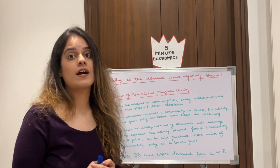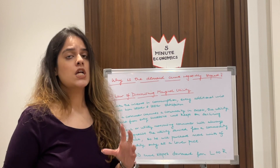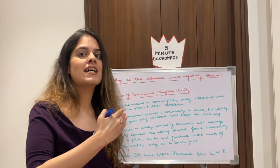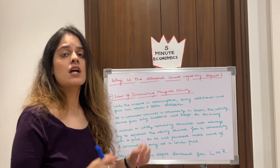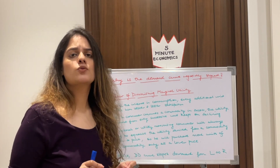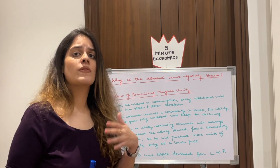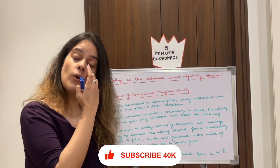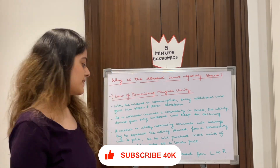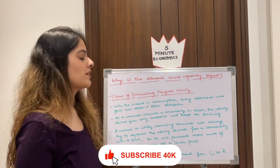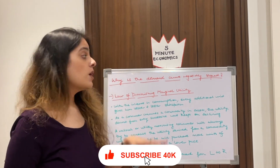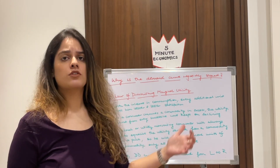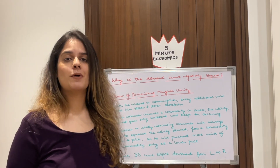A rational consumer — also known as a utility-maximizing consumer — will always try to equalize the utility derived with its price. So they will purchase more units of a commodity only at a lower price. Because they are rational, they will spend less on a second purchase, demanding more only at a lower price, and hence the demand curve slopes downward from left to right.